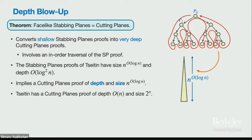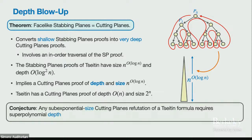This theorem converts shallow stabbing planes proofs (shallow trees) into very deep cutting planes proofs, because the in-order traversal of the stabbing planes tree unrolls into a very deep cutting planes proof. For example, the stabbing planes proofs of Tseitin have quasi-polynomial size and poly-logarithmic depth, but after this translation the resulting cutting planes proof has both quasi-polynomial depth and quasi-polynomial size — which is weird, since every unsatisfiable CNF formula has a linear-depth cutting planes proof.